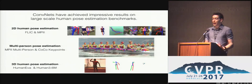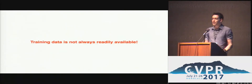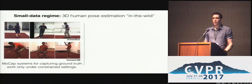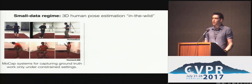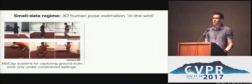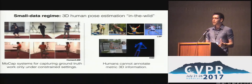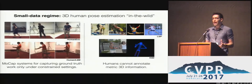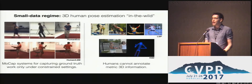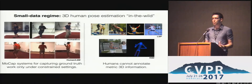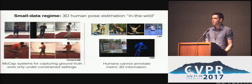Unfortunately, this assumption of abundant data is usually far from true. For example, 3D human pose estimation in the wild remains a huge challenge because current motion capture systems for 3D ground truth acquisition don't work outside, and we cannot expect humans to reliably annotate metric 3D information and get benchmarks with the variability of 2D pose datasets like MPII or LSP.